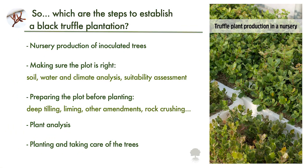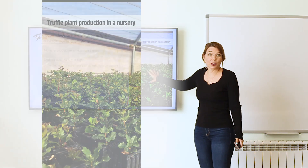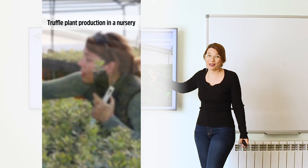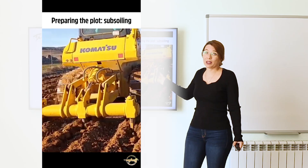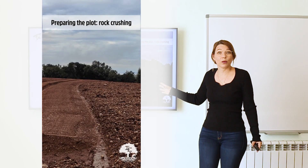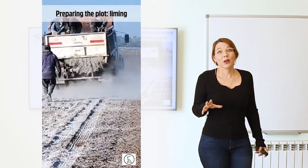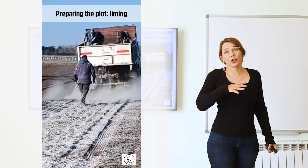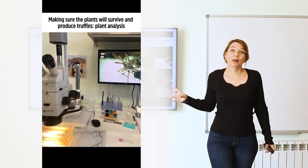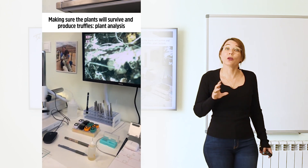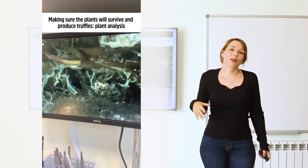What are the steps to start a plantation? If your country has no nurseries producing inoculated plants, you have to produce your own — that's the harder part. Then you have to prepare your agricultural plot: work the soil in depth, crush rocks if there are too many, and do a soil analysis — very important. If the pH is not correct, you have to lime it, which is very common especially in the southern hemisphere. You also have to analyze the plants to make sure they have the right fungus, because often plants won't have it at all or will be contaminated with another species.